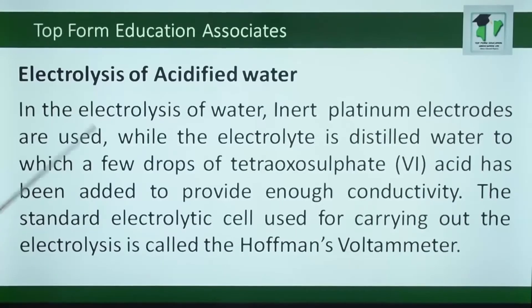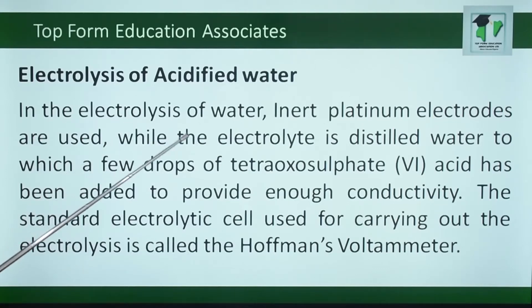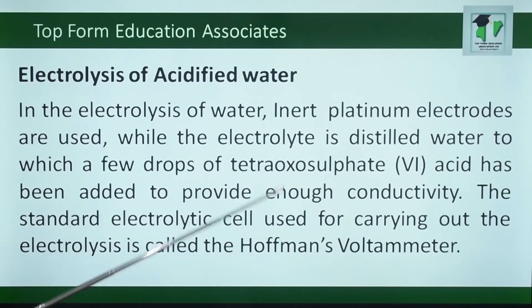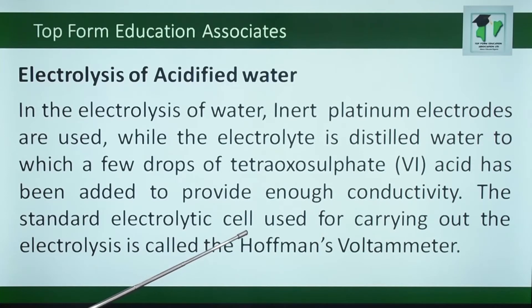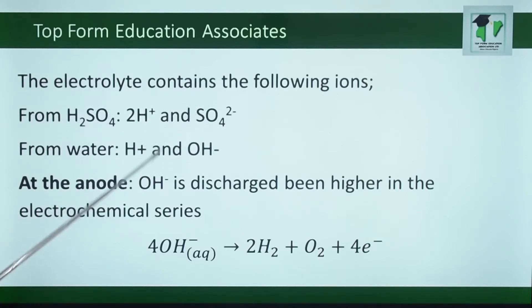Electrolysis of acidified water. In the electrolysis of acidified water, inert platinum electrodes are used, while the electrolyte is distilled water to which a few drops of tetraoxosulfate-6-acid (H₂SO₄) has been added to provide enough conductivity, because water is a poor conductor of electricity. The electrolytic cell used is called the Hoffmann's voltameter. The electrolyte contains the following ions: from H₂SO₄, we have hydrogen ion and sulfate ion; and from water, we have hydrogen ion and hydroxyl ion.